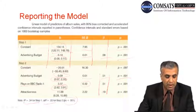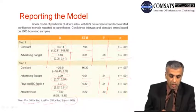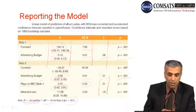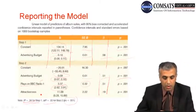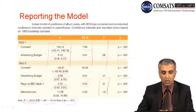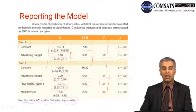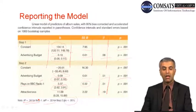We have also reported R-squared here, which is 0.34, or 34% of variation. Likewise, delta R-squared is 33%. The model changed and there was a change in variance of 33%, which was significant. This is the way to report a standard model and its results.